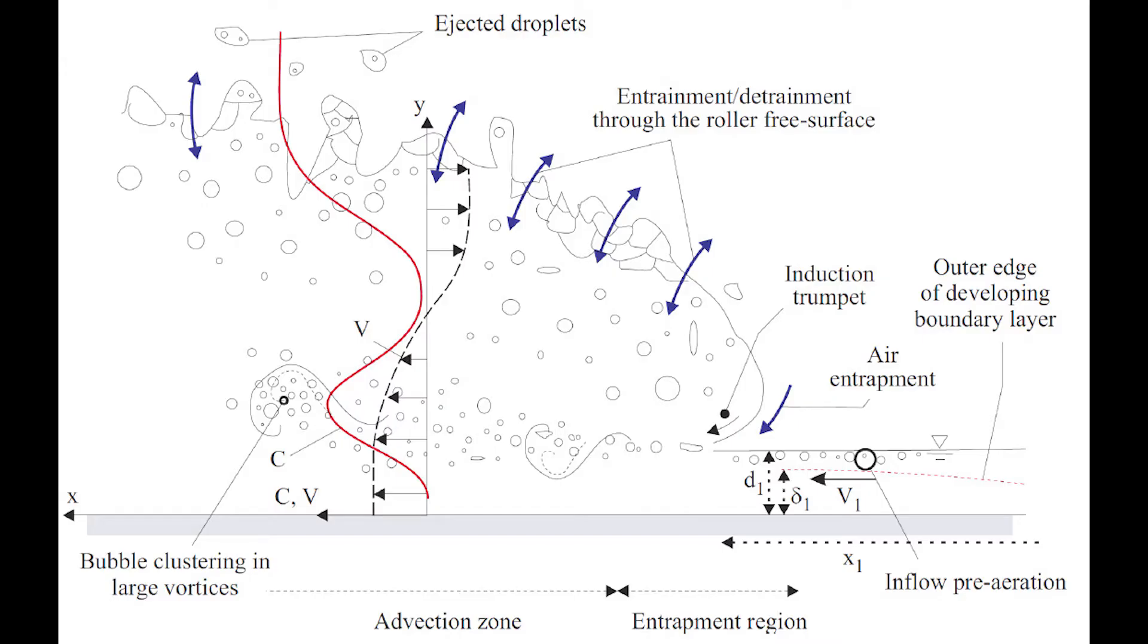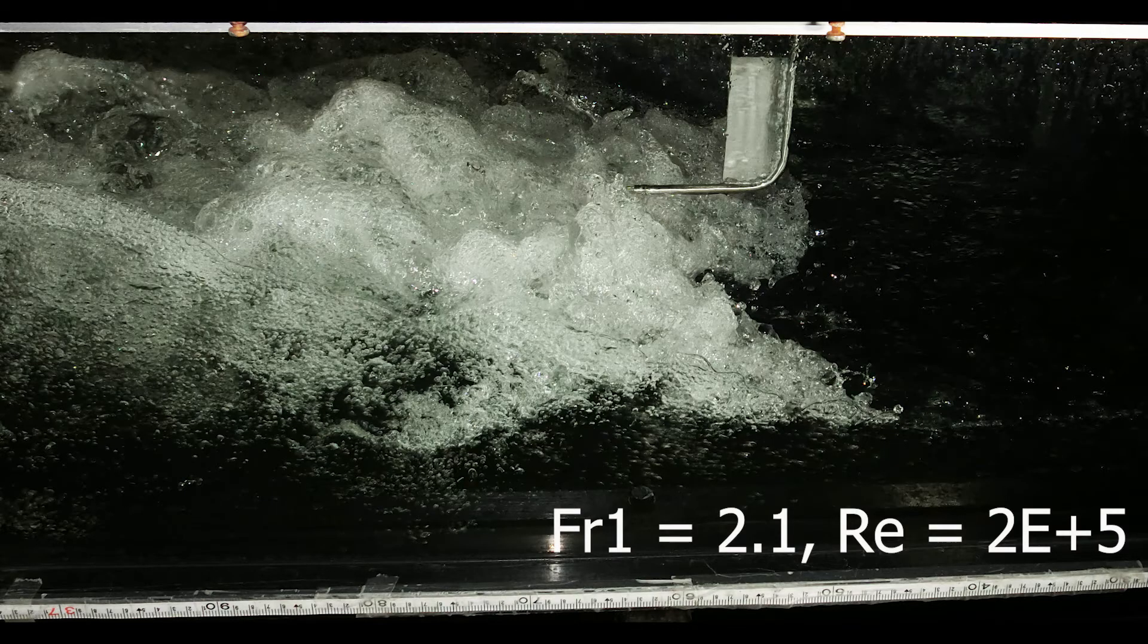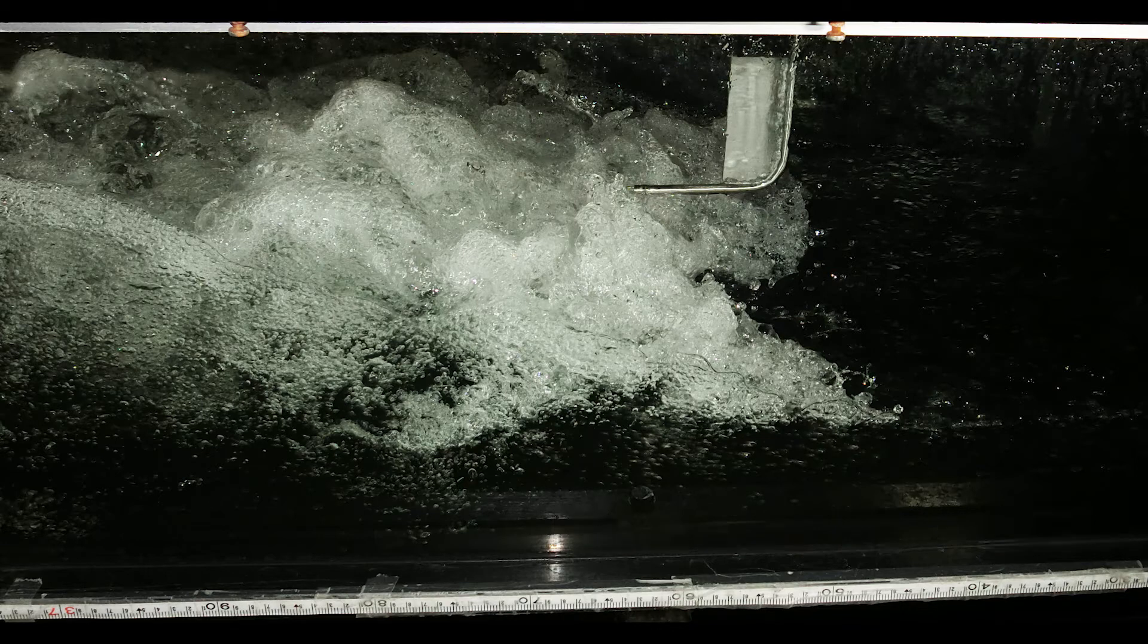This sketch illustrates the key air-water flow pattern in the hydraulic jump and its roller. The high shutter speed photograph presents a laboratory experiment for an inflow Froude number of 2.1 and a Reynolds number of 2×10^5.